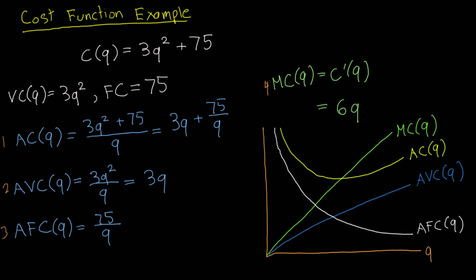The average cost curve has a nice property where its minimum intersects the marginal cost curve — I'll prove that in a later video. This is an illustration of these cost curves using a simple quadratic cost function. Sometimes you'll have more extreme examples such as a cubic cost function, which I can go over in future videos. If you liked this video, make sure you like it and subscribe, and I'll catch you later.